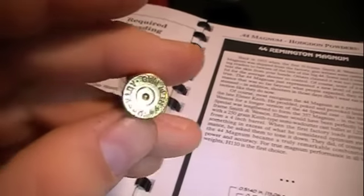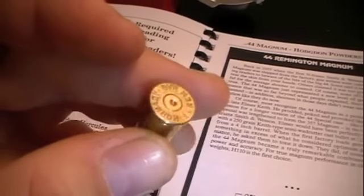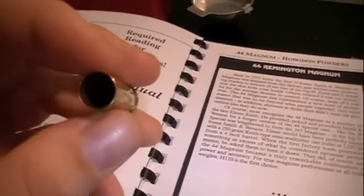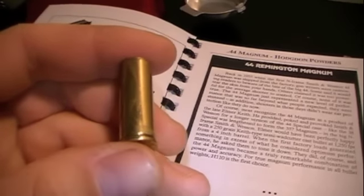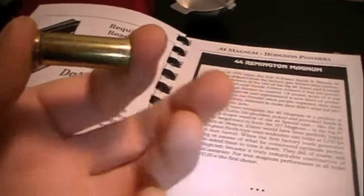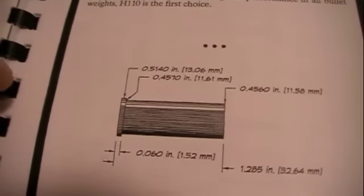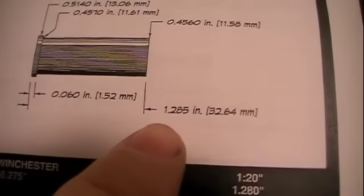The other thing you want to check is make sure your primers have not bulged out. And if they have that is usually an indication of excessive pressure so you might be loading a little too hot. So keep these things in mind. And the other thing is for a real purist you want to make sure the case is a uniform length. And here they show you the maximum length of the case is 1.285 inches.